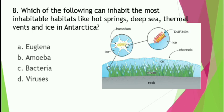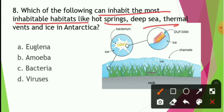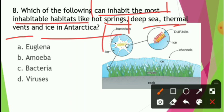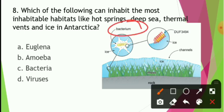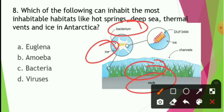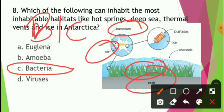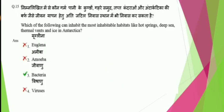Which of the following can inhabit the most uninhabitable habitats like hot springs, deep sea, thermal vents, and ice in Antarctica? Bacteria can survive in extreme conditions — ice, mosses, rocks. If life on Earth began, bacteria could be present; if it ends, bacteria would survive last. Bacteria and cockroaches are the two things most likely to survive extreme conditions.